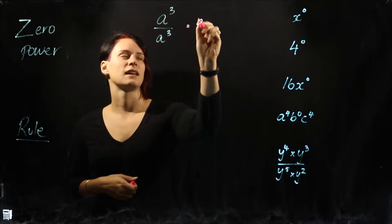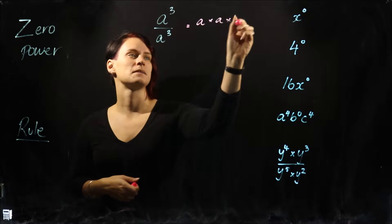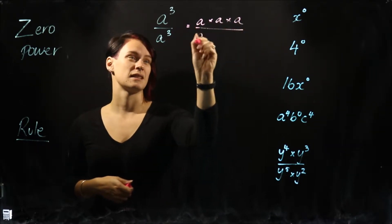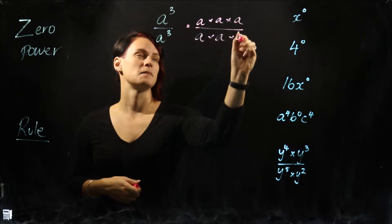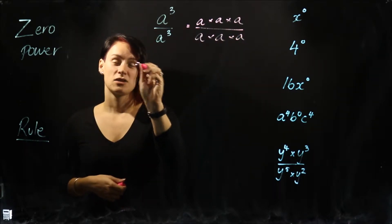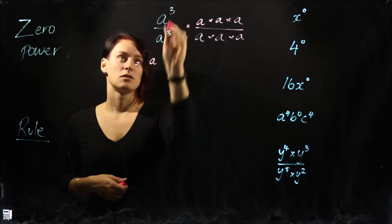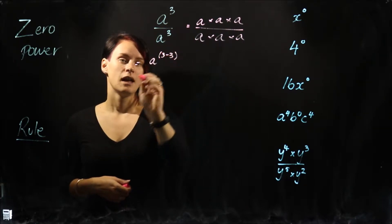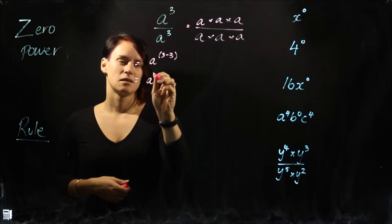A to the power of three is actually saying A times A times A, and we're dividing it by A to the power of three. So it's going to say the same thing, A times A times A. Now, we could do it using our subtraction rule as well. We could say A to the power of, well, they're dividing there, so three take three. And what that's going to leave us with is A to the power of zero.